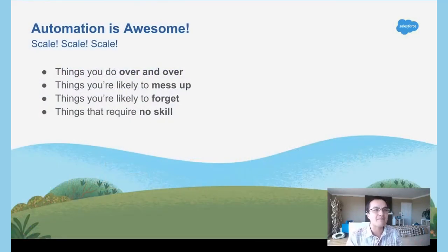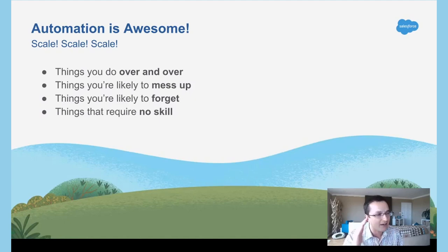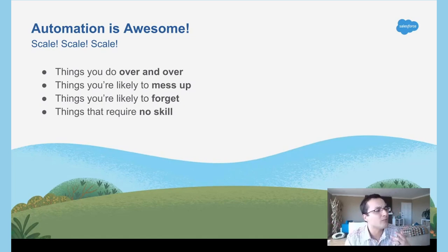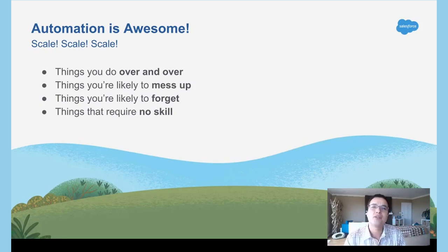Automation is awesome. This is how you are going to scale — that's the whole point of automation. Think about the right targets for your organization: things that people do over and over again, things people are likely to mess up or forget, and things that don't require any skill or human decision-making. Two days after someone signs up, they're going to get an email — you don't need a person involved. Automate it.